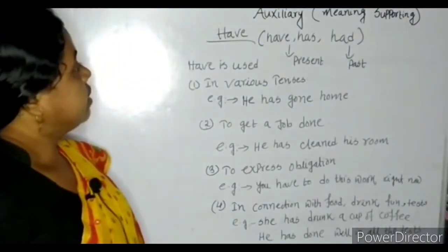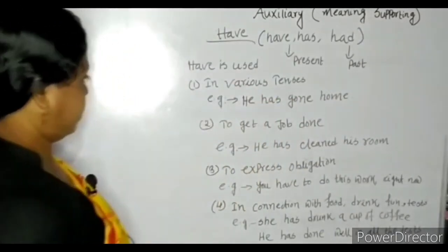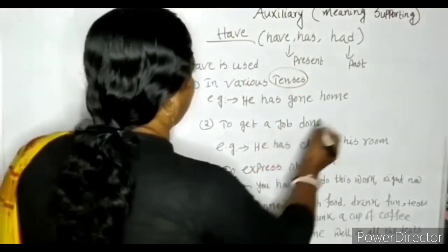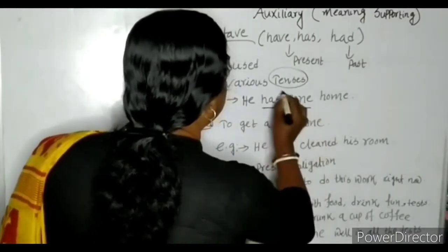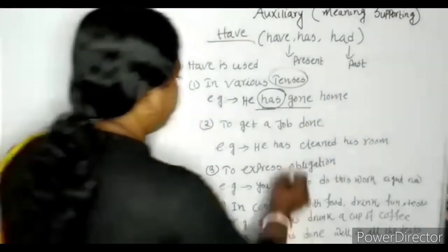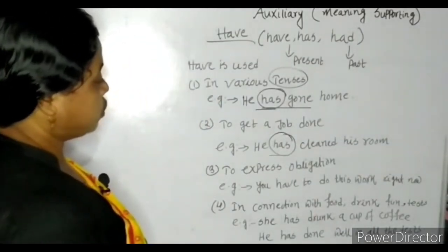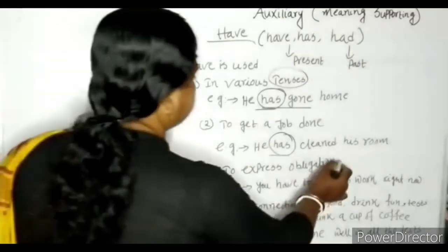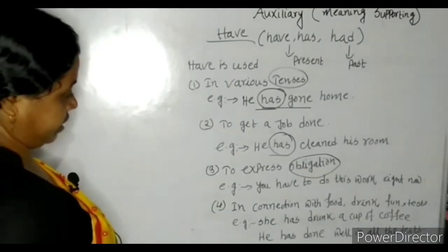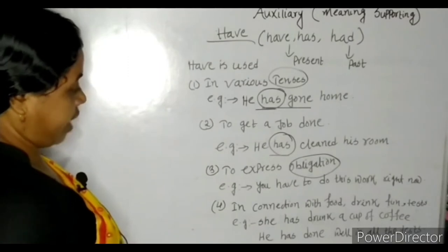Have is used in various tenses — he has gone home. Have verb is used to get a job done: he has completed his room. Have is used to express obligation: you have to do this work right now. In connection with food, drink, fun, taste, etc.: he has drunk a cup of coffee.